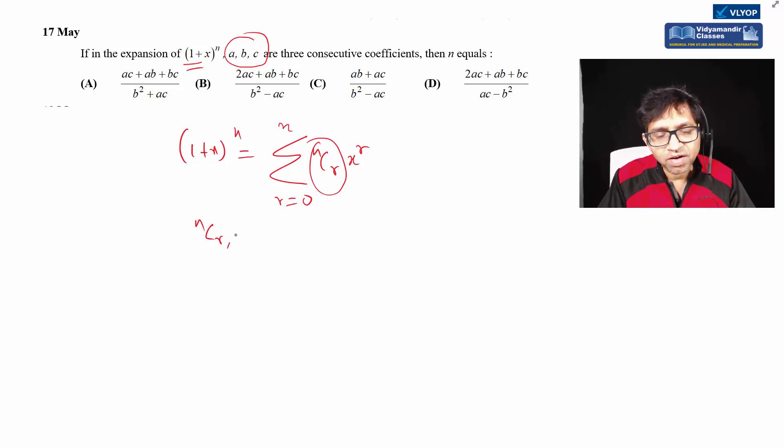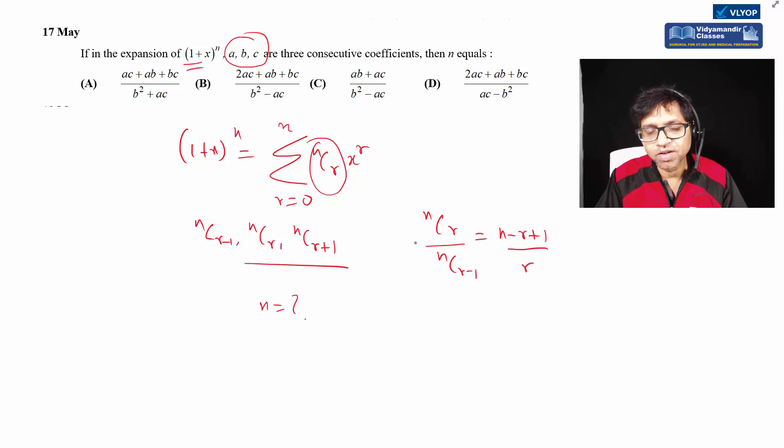Three consecutive coefficients. Now I have to find n in terms of A, B, C. The formula nCr over nC(r-1) equals (n-r+1)/r. This saves time - I don't have to derive nCr. The second term is B, first term is A.